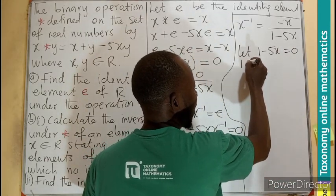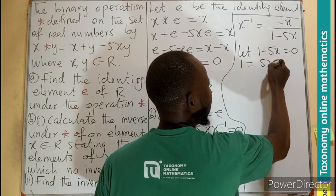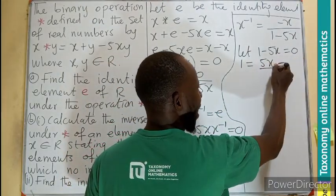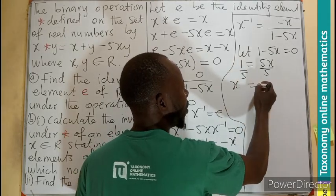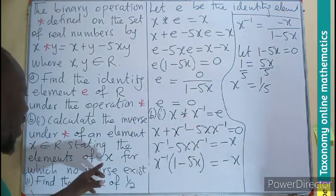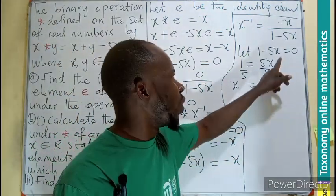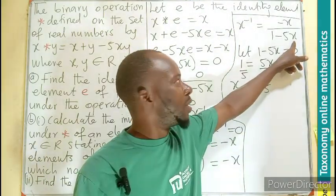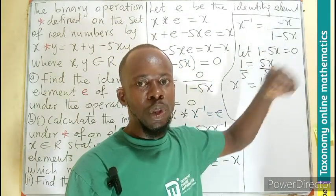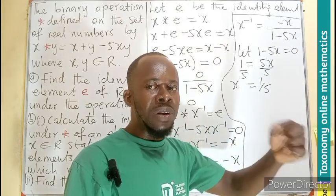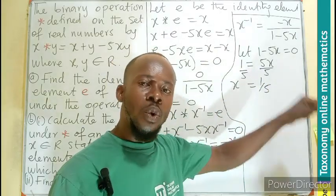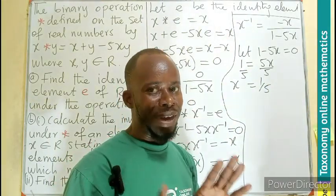So 1 is equal to 5x. This negative 5x goes to the right to become positive. So we divide by 5, and x will be equal to 1 over 5. It means that the inverse of x will not exist if x is equal to one-fifth. Meaning 1 minus 5 times one-fifth will become 1 minus 1, which will be 0. So the moment x assumes the value one-fifth, it means there is no inverse.